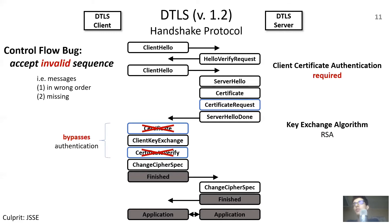Complicating matters further, for each configuration, implementations must ensure there are no missing messages and must also process messages in the right order. Failing that can lead to control flow bugs with potentially dire consequences. One such bug is where a server allows a client to bypass authentication despite being configured to require it. This is one of many examples, so the question is: how can we test for these bugs in order to prevent them?